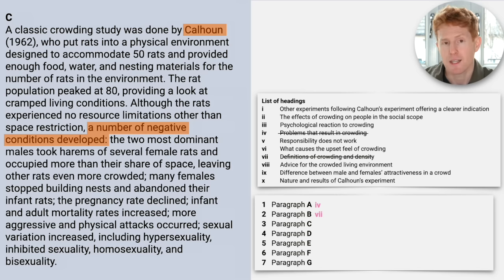Pause the video, choose the correct answer, and then we're going to go through it together. Okay, I think the answer is here. Do you think the answer is there? If you don't, then pause the video again and work out why the answer is there. In this case, it's number one. Other experiments following Calhoun's experiment offering a clearer indication. So this paragraph looks at other research, so research and experiments, as a result of Calhoun's study. This other research, which looks at humans, better predicts the negative effects. So therefore, it offers a clearer indication. It better predicts the negative effects.